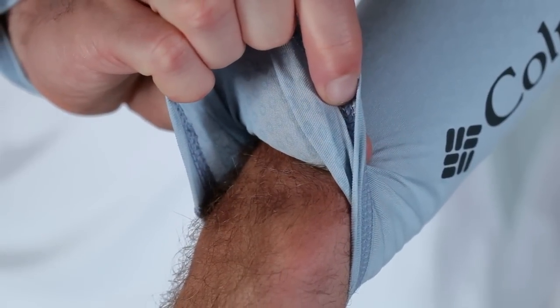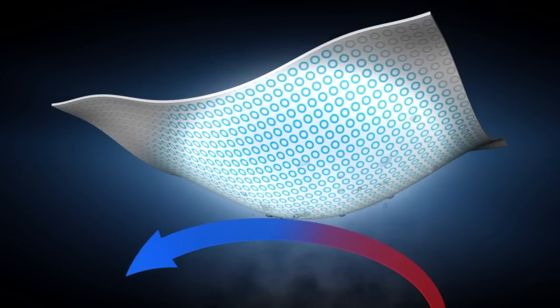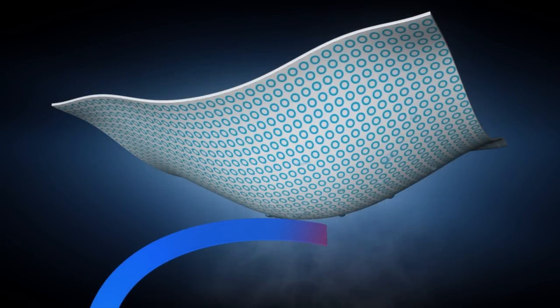First up, OmniFreeze Zero uses little blue rings that position an active cooling agent next to your skin and react with your sweat to lower the temperature of the fabric, creating an instant and prolonged cooling effect.